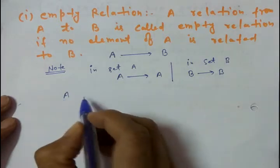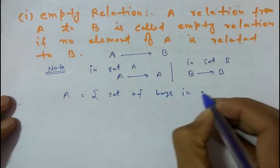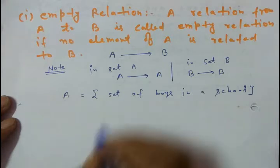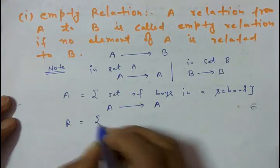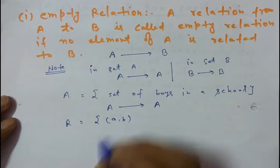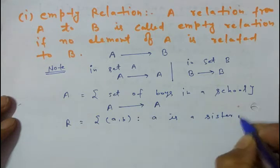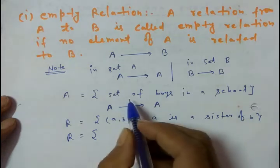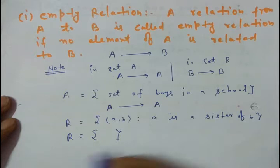Let's take an example. Suppose set A is the set of boys in a school. A relation is defined inside set A as: R = {(a, b) such that a is a sister of b}. Now we know that no boy can be a sister of another boy, so there is nothing in our relation — it is an empty relation.